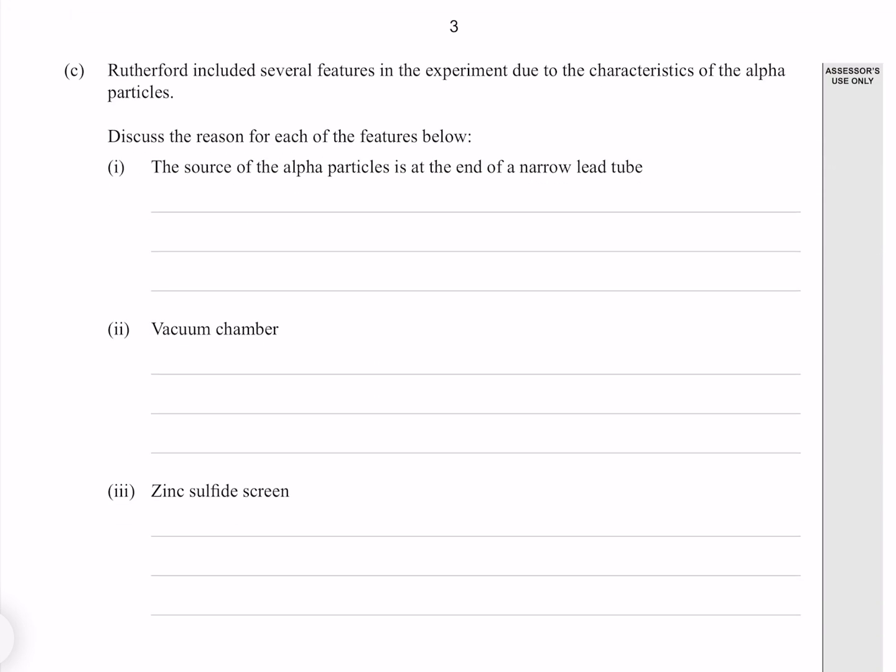Rutherford included several features in the experiment due to the characteristics of the alpha particles. Discuss the reason for each of the features below. The source of the alpha particles is at the end of a narrow lead tube. This was to direct the particles into a thin beam.